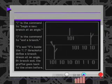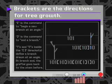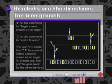Brackets are the directions for tree growth. The left bracket tells the program to begin a new branch at an angle. The right bracket is the command to end a branch. Ones and zeros used between the brackets define a branch drawn at an angle. After the right bracket ends a branch, the computer returns to the previous branch to continue the facts from the string and draw the next branch.